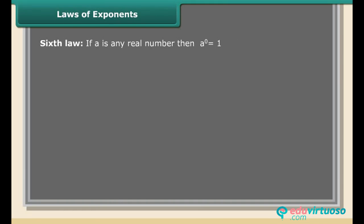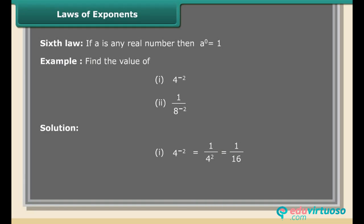Sixth Law: If A is any real number, then A raised to the power 0 equals 1. Example: Find the value of 4 raised to the power minus 2 and 1 upon 8 raised to the power minus 2. Solution: 4^(−2) = 1/4² = 1/16. 1/8^(−2) = 8² = 8 × 8 = 64.